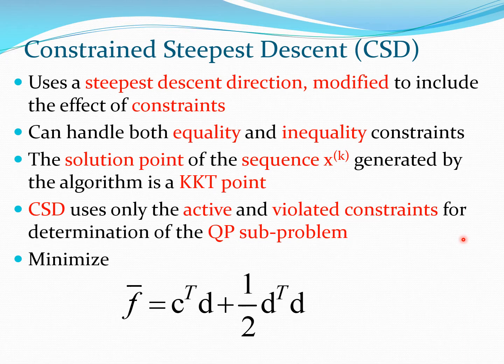Let's go back to the QP problem. We essentially plan to minimize a function of this sort: C transpose D plus half of D transpose D, where we are presuming that the H matrix is a unit matrix which of course is positive definite.